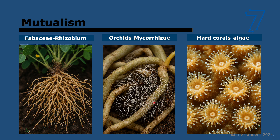Second, orchids associate with the fungus mycorrhizae. The orchids supply sugars from photosynthesis to the fungus, and the fungus supplies ammonium — especially important when the orchid is a seedling. Third, hard corals absorb algae into their cells forming a mutualistic relationship. The coral cell provides a safe environment and carbon dioxide from cell respiration to the algae, and the algae provide carbon compounds and oxygen produced by photosynthesis. Win-win.